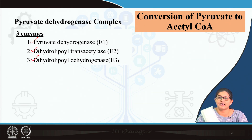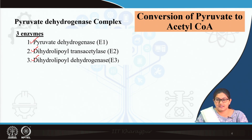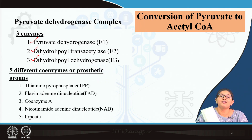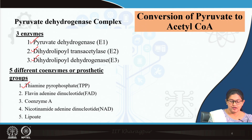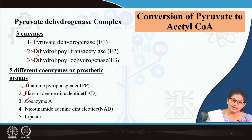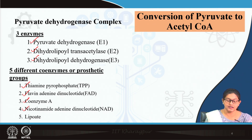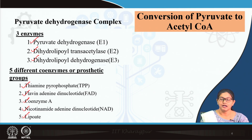There are 3 different enzymes present in this enzyme complex. Not only that, there are 5 coenzymes or prosthetic groups. What are those? Thiamine pyrophosphate, flavin adenine dinucleotide, coenzyme A, nicotinamide adenine dinucleotide, and lipoyl. These are the 5 different prosthetic groups or coenzymes.